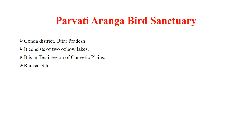Parvati Aranga Bird Sanctuary is located in Gonda district of Uttar Pradesh. This bird sanctuary consists of two oxbow lakes. It is located in the Tarai region of the Gangetic Plains. It is a Ramsar site.